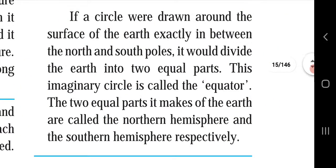If a circle were drawn around the surface of the earth exactly in between the North and South Poles, it would divide the earth into two equal parts. This imaginary circle is called the equator. The two equal parts it makes of the earth are called the Northern Hemisphere and the Southern Hemisphere respectively.